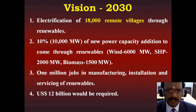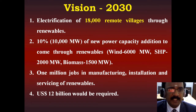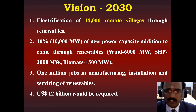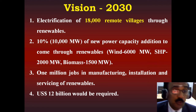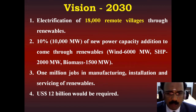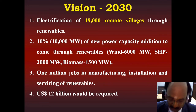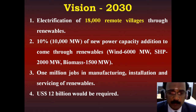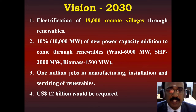What is the Vision 2030? Electrification of nearly 18,000 remote villages through renewables is our target. A 10 percent addition, nearly 10,000 megawatts of new power capacity, is to come through renewables: wind 6,000 megawatts, hydropower plants 2,000 megawatts, bio-based 1,500 megawatts. Through these projects, we can have 1 million jobs in manufacturing, installation and servicing of renewable energy. US $12 billion would be required to meet the Vision 2030 targets.